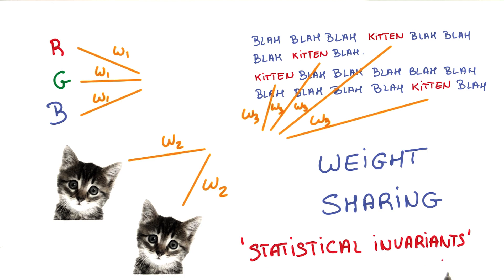Statistical invariance, things that don't change on average across time or space, are everywhere. For images, the idea of weight sharing will get us to study convolutional networks. For text and sequences in general, it will lead us to embeddings and recurrent neural networks.